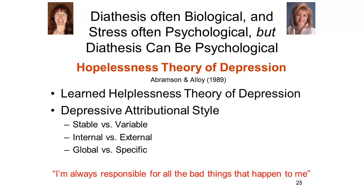They could also be made to global factors or specific factors. You could say, I failed the test because I'm just not very smart, implying that you're not smart about anything. Or you could say, I'm not very good at this particular thing. Abramson and Alloy proposed that people become depressed when they're exposed to unpredictable and uncontrollable aversive events, but only when they view those events through a particular cognitive lens. This attributional style they characterized as stable, internal, and global. Some negative thing happens, the person tries to understand why, and he says to himself: it's because of me, I'm always responsible for all of the bad things that happened to me. And if you're going to make an attribution like that, you're going to get depressed.